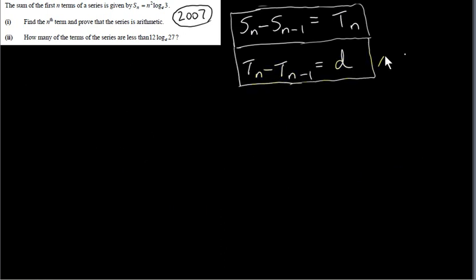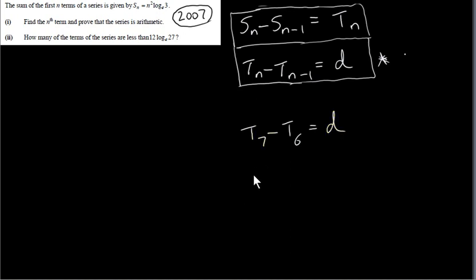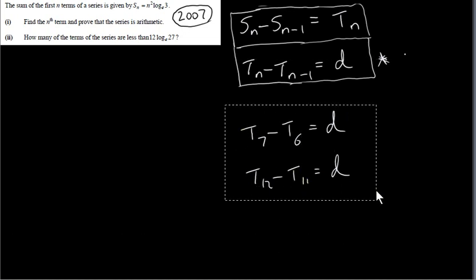Of course, I needn't really have proven this second result — you know it from the very first video in the playlist. If you take any term in an arithmetic series, say t₇, and subtract the previous term t₆, you get the constant d. It doesn't matter what n is — you'll always get a constant d. More generally, you know that from earlier videos.